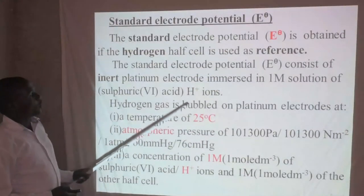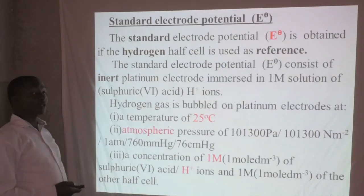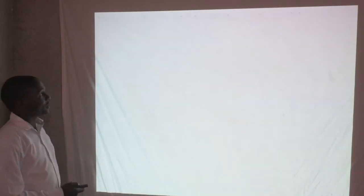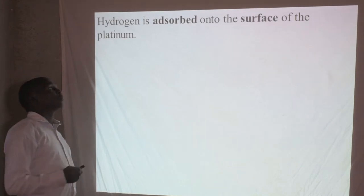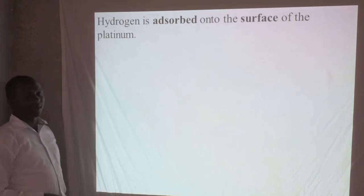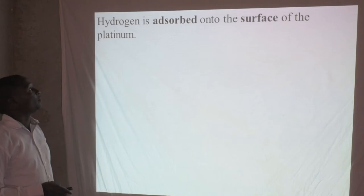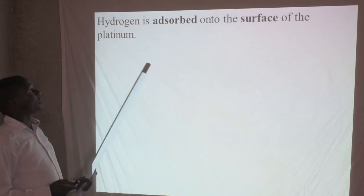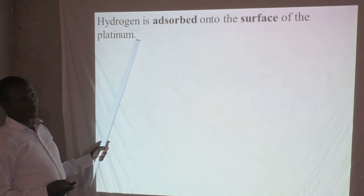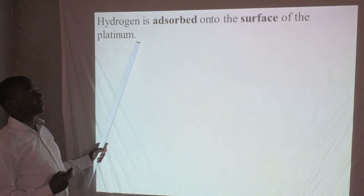The hydrogen gas is absorbed on the surface of the platinum. Because platinum is an inert electrode, it does not participate in the reaction, but it facilitates the ionization of hydrogen ions.